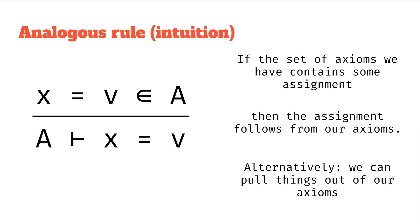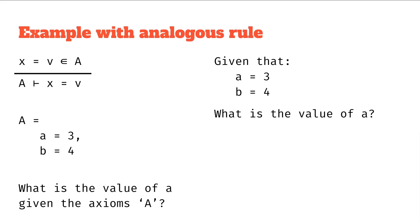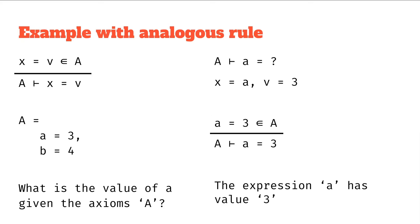Taking it even further, we can do an example with the analogous rule. So let's say you're given an exam question, which says A equals three, and B equals four, and you're asked, what is the value of A? Well, you have to have some process for getting that. And the process you can go through is where you can say, well, we're being asked from the axioms, it follows that A has what value?